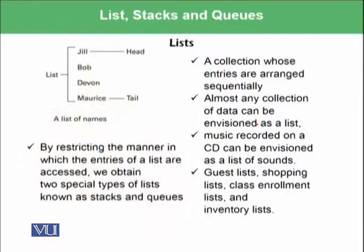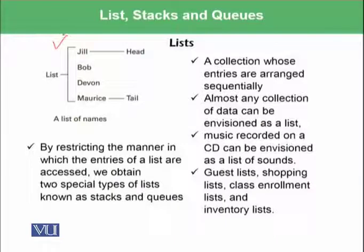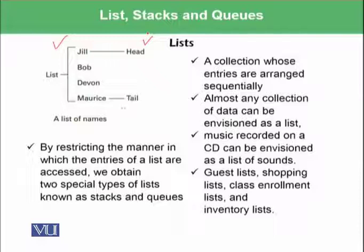So what is a list? A list is a collection whose entries are arranged sequentially. Here we have displayed a list containing different names, and this list has a start which is denoted by head and the last entry as tail.